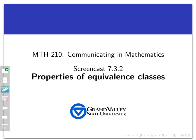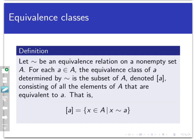Welcome back to another screencast about equivalence classes. In this screencast, we're going to prove three important properties about equivalence classes. First, let's remind ourselves what an equivalence class is. If we start with an equivalence relation tilde on a non-empty set A, and let little a be an element of capital A, then the equivalence class of little a, determined by tilde, is a subset of capital A. We denote it with square brackets around the little a, and it's the set of all points in capital A to which little a is equivalent.